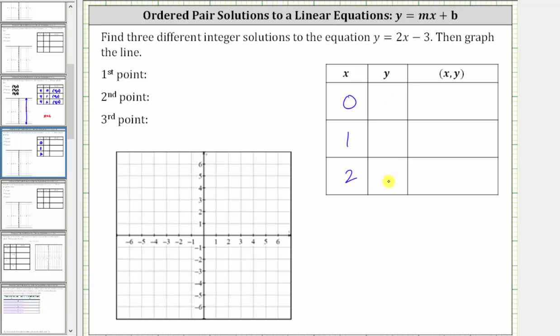And now we need to find the corresponding y values for each x value. So when x equals 0, y is equal to 2 times 0 minus 3, which gives us 0 minus 3 or negative 3. The ordered pair (0, -3) is a solution to the equation. It also represents a point on the graph.